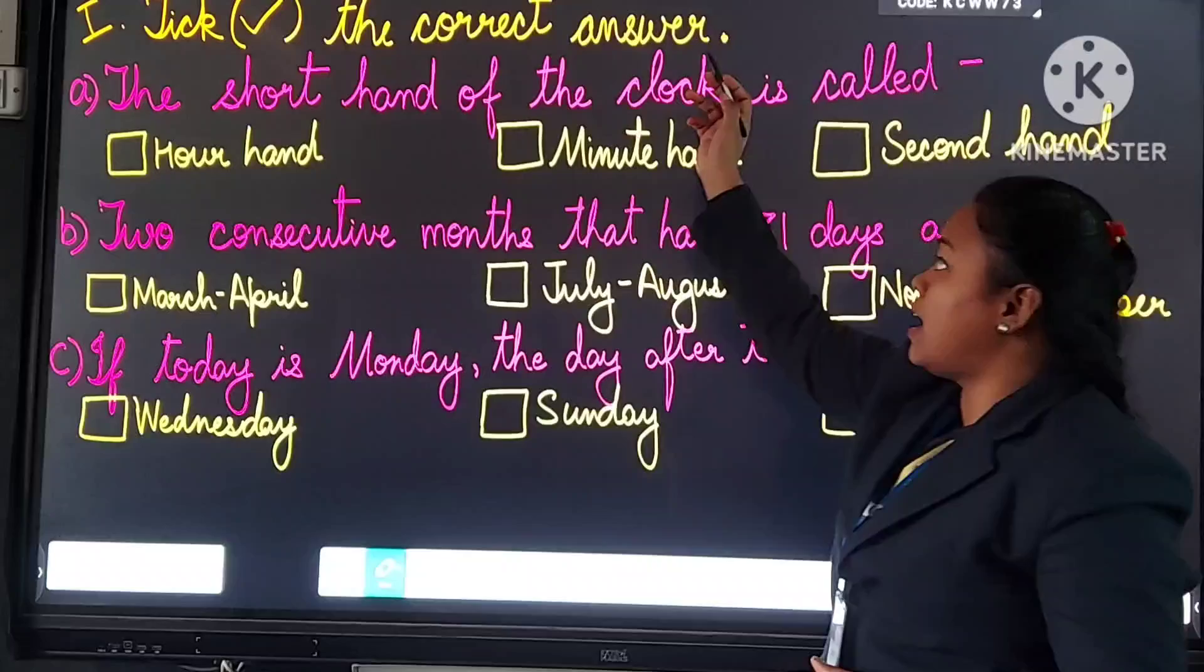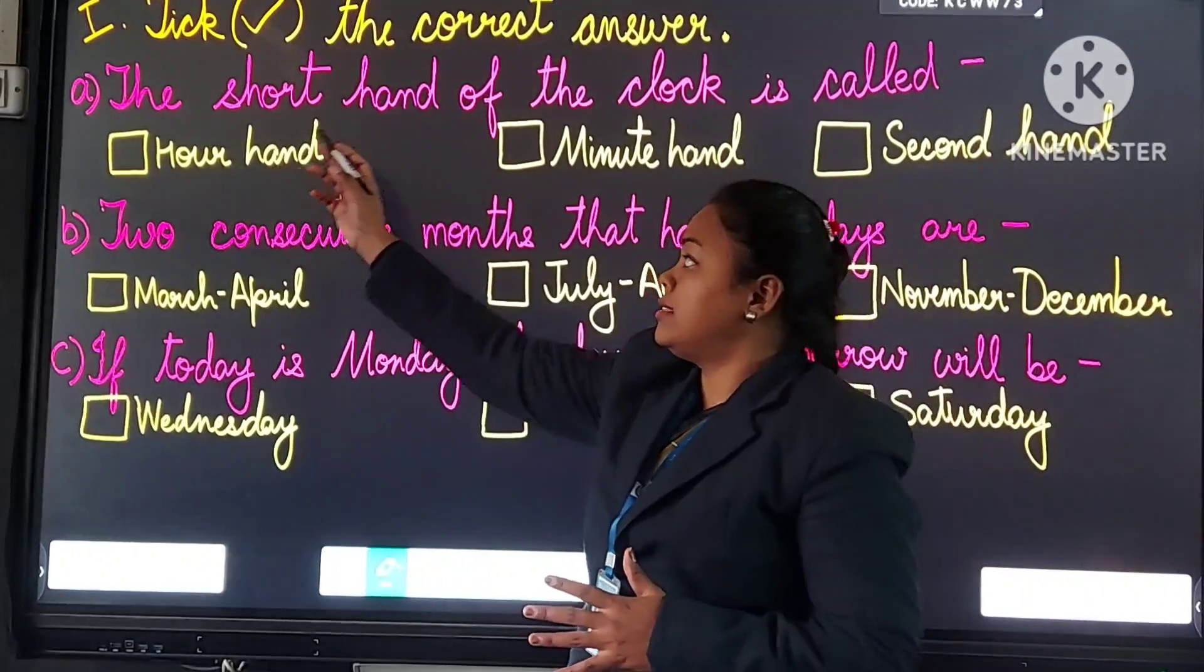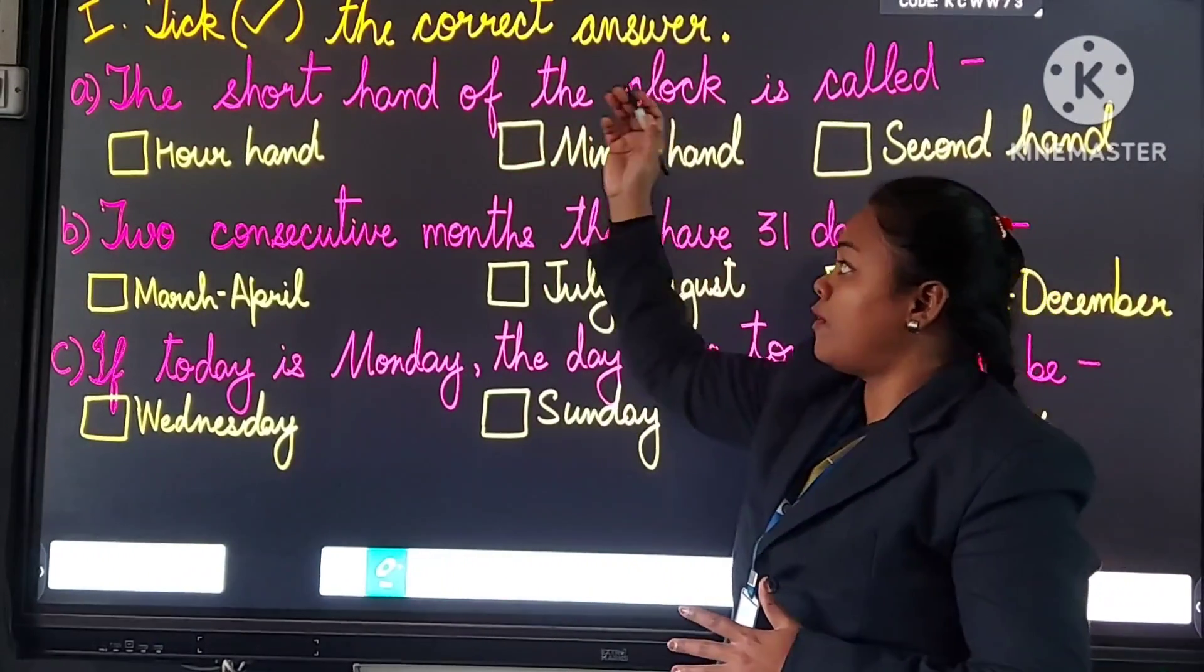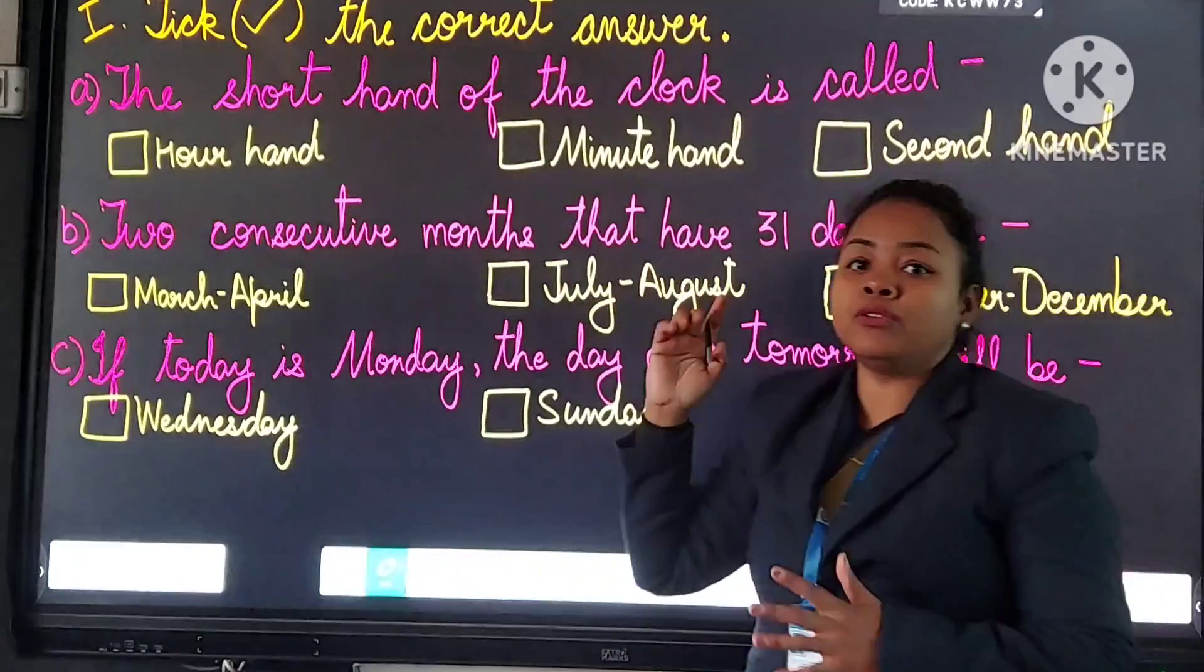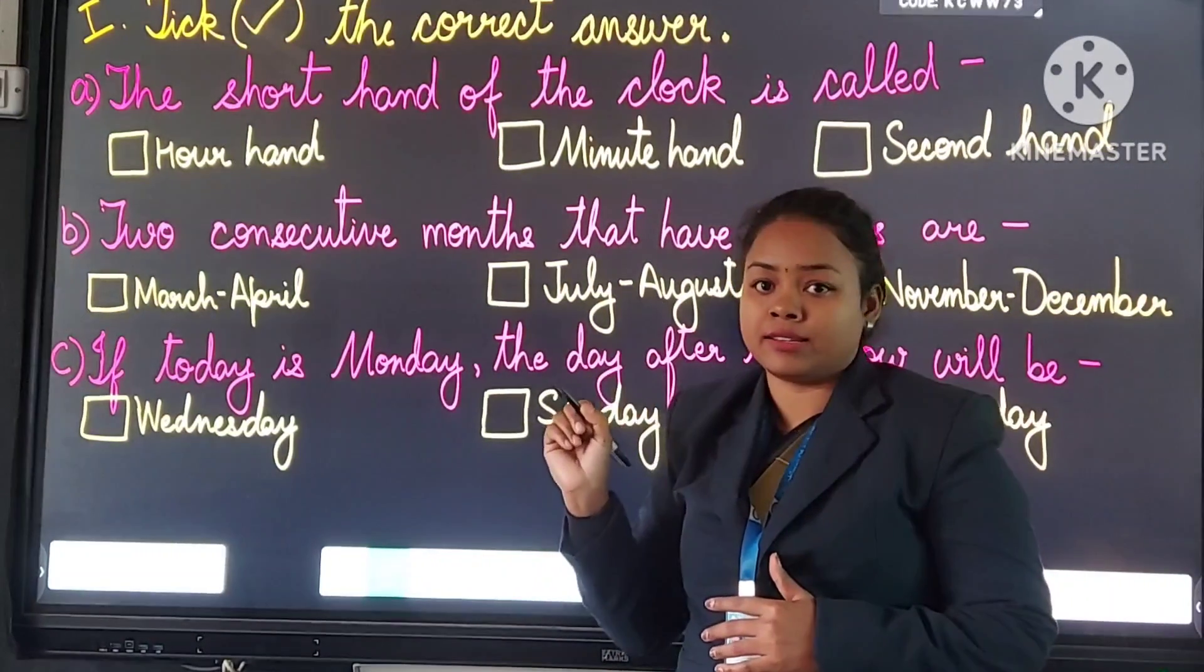Here is your first exercise. Tick the correct answer. Students, a sentence is given here. For this sentence, three options are given here. You have to tick the correct answer.